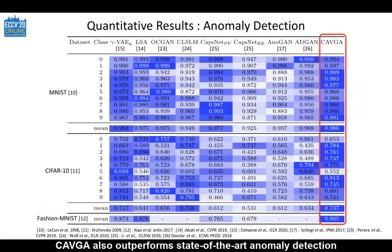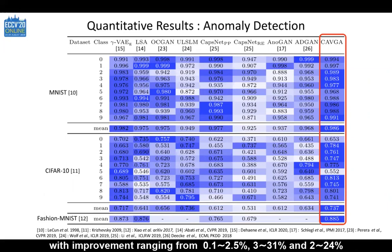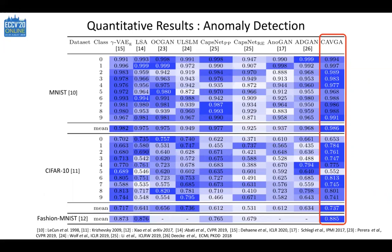CAVGA also outperforms state-of-the-art anomaly detection methods on three academic benchmark datasets — MNIST, CIFAR-10, and FASHION-MNIST — with an improvement ranging from 0.1 to 2.5%, 3 to 31%, and 2 to 24% respectively.